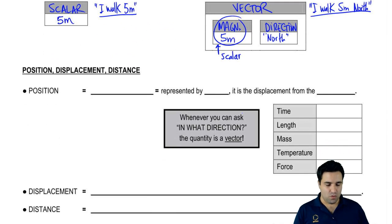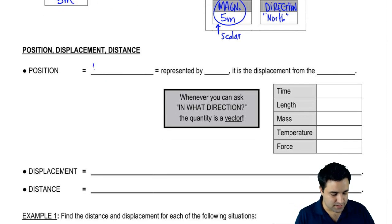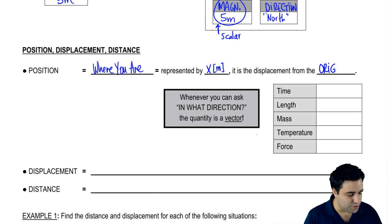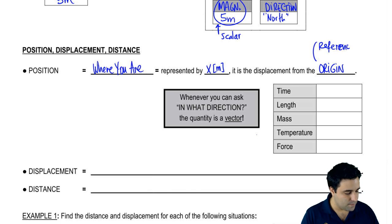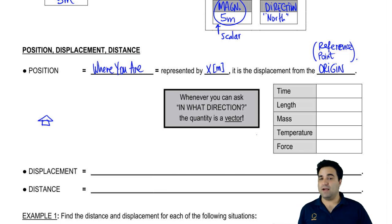So to help illustrate that idea, we're going to talk about position, displacement, and distance, which are three important variables in motion. Position is simply just where you are. It's represented by the letter X and measured in meters. The more formal definition is that it's the displacement from the origin. The origin just means some sort of arbitrary reference point you make up — for example, if you're leaving your house, you might say your house is your reference point, though your origin doesn't have to be your initial position.